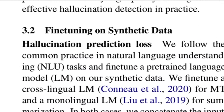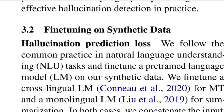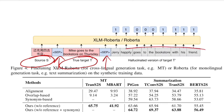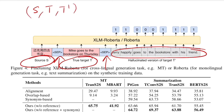Now they fine-tune a model on the synthetic data. The input format is: source sentence, separator token, true target, separator token, then the hallucinated target generated by BART — a triple of (source, actual target, hallucinated target). Because of the Levenshtein-based labeling strategy, they have ones and zeros against the hallucinated text tokens, which are used as signals to back-propagate the loss and make the model learn the distribution of hallucinated tokens.